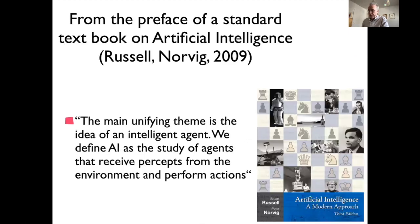I want to start by citing a well-known AI textbook — Russell and Norvig, third edition. In the preface, the authors define the unifying theme of artificial intelligence as the idea of an intelligent agent. They define AI as the study of agents that receive percepts from the environment and perform actions. This is very close to how we think about animals and humans showing their cognitive competence by performing in the world.